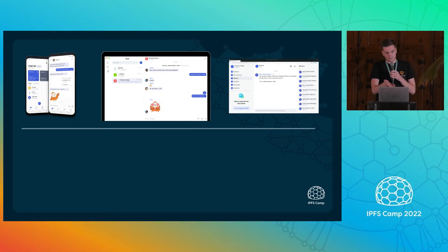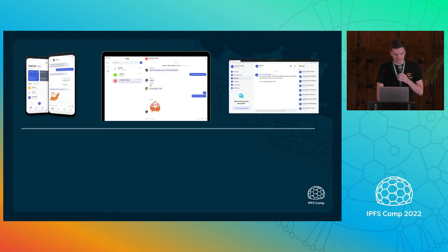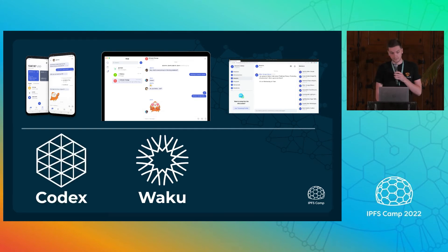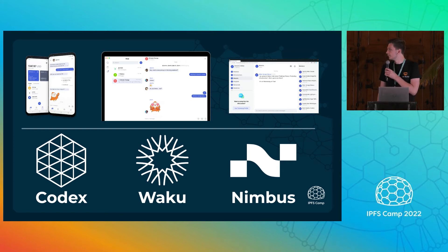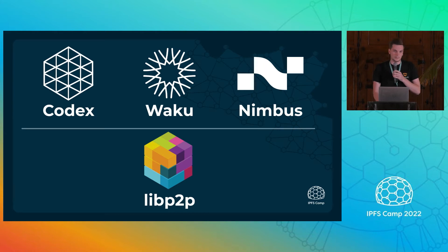Status is mostly known for its peer-to-peer decentralized chat application. But when we started to build this application in 2017, we quickly realized that we were lacking a lot of infrastructure to be able to build it. Peer-to-peer is hard, as we all know. So we started a whole branch of Status focused on what we call the infrastructure projects. We have a few projects like this: Waku, which is our messaging layer on which Status is built; Codex, which is a storage layer; and Nimbus, which some of you probably know, which is a consensus and execution client for Ethereum. And if we look a bit deeper, all of these projects are based on LibP2P — and actually, to be more precise, NimLibP2P.